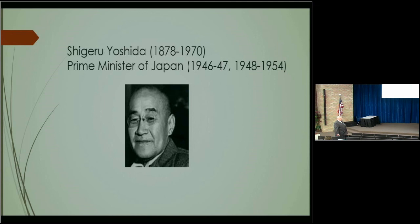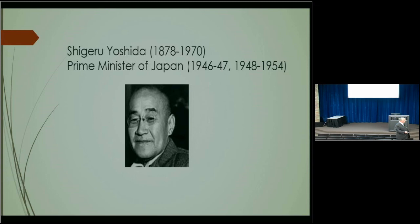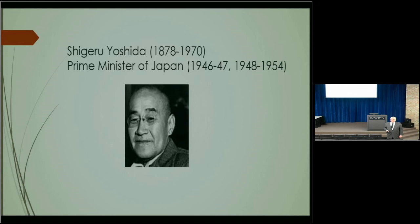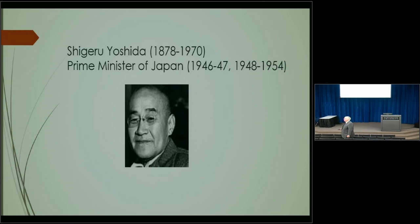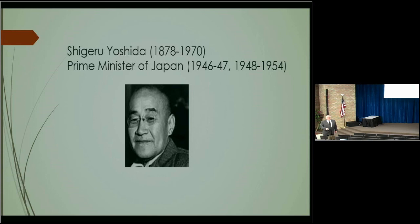Japan's problem is demographic. To maintain population you need 2.1 children; the U.S. is at 1.9, and Japan is way below that. The Rockefeller Foundation convinced Japan to limit its population — China faces the same thing. In 50 years, China's population will be half of what it is today. You can't build an economy on one child.